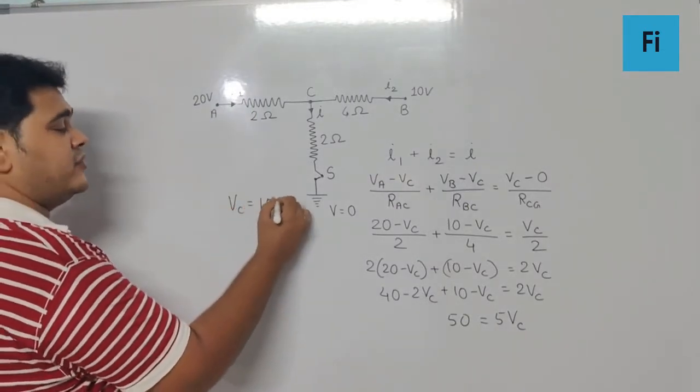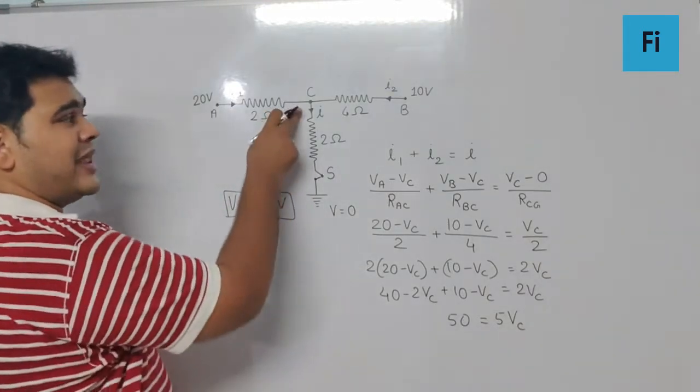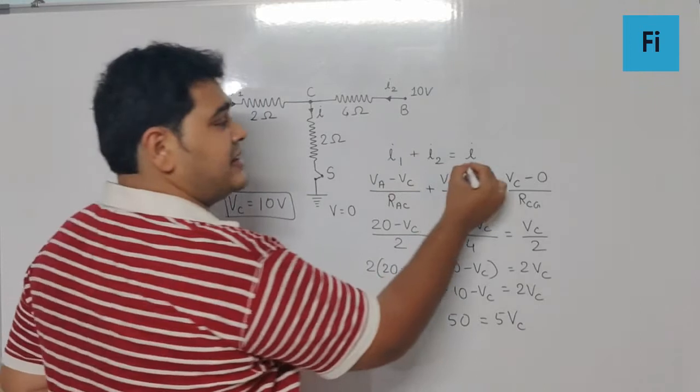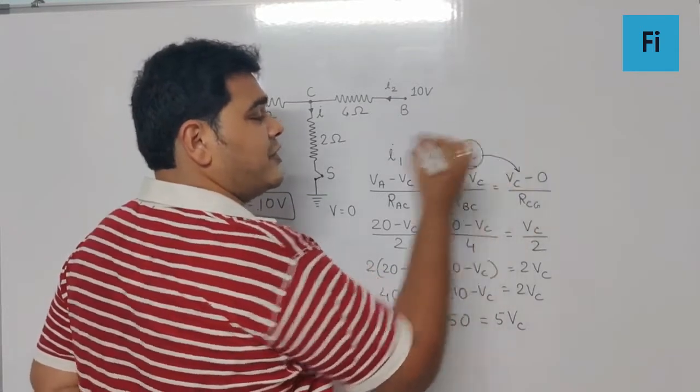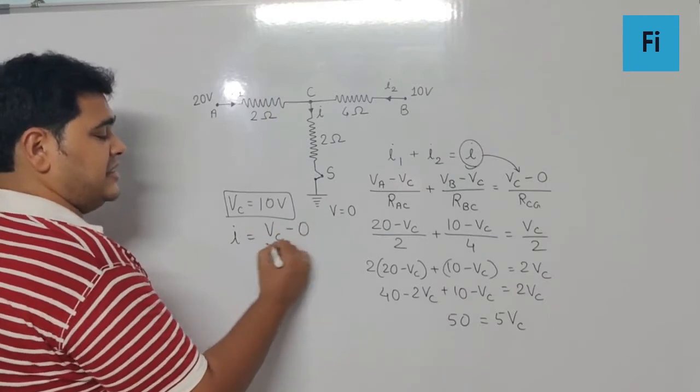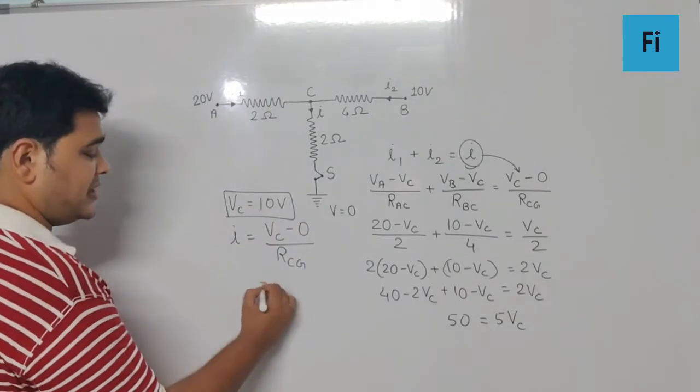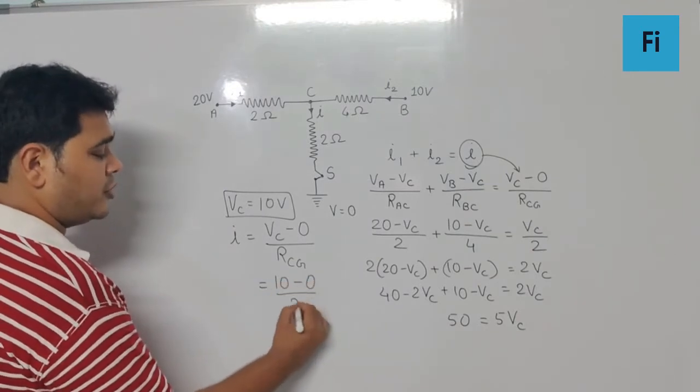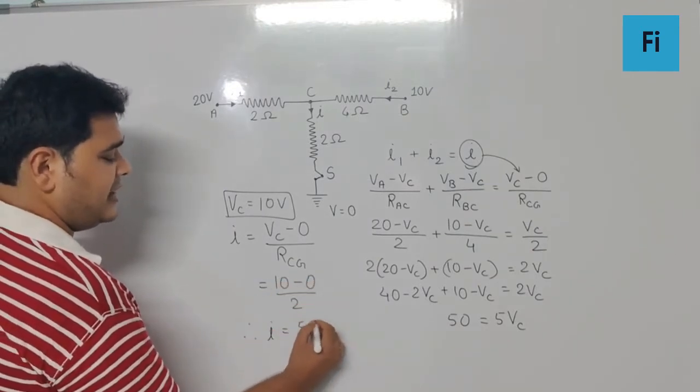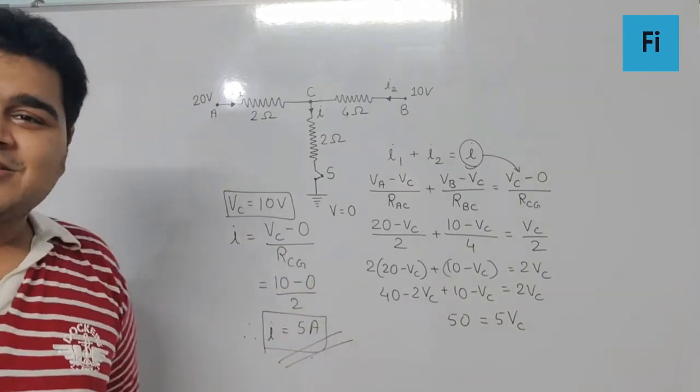Now once we have got the value of potential at C, I can find the current i using this formula. So we know i is VC minus 0 upon R between C and ground. So that is 10 minus 0 upon 2, and so our current i is 5 ampere and that will be our final answer.